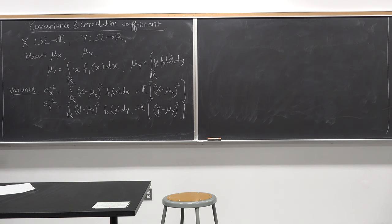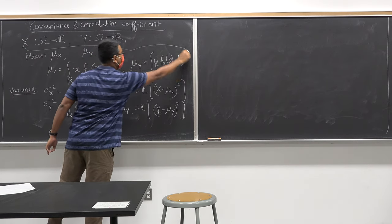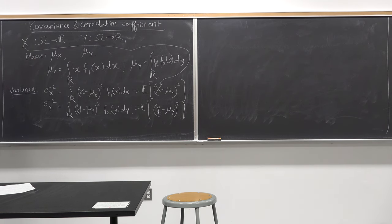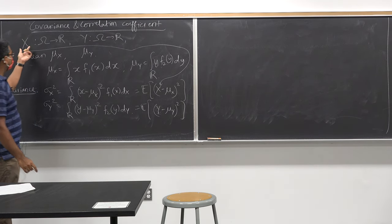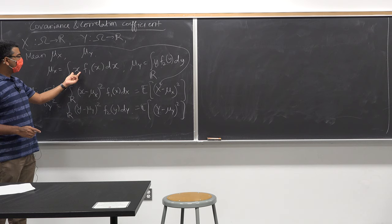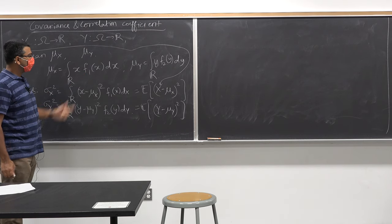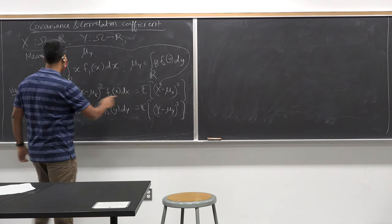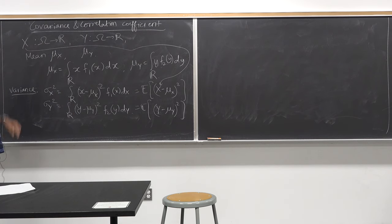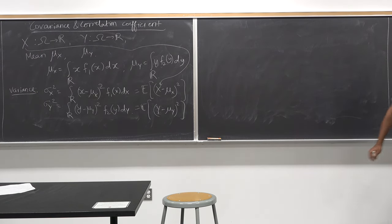One notational thing in probability: when writing expectation I write the random variable as capital X, but when writing the integral it's small x. Capital X represents the random variable; small x is a realization of that random variable. In the integral I write it in terms of realizations, whereas in expectation and probability I write it in terms of the random variable. That's just the convention in the probability field.